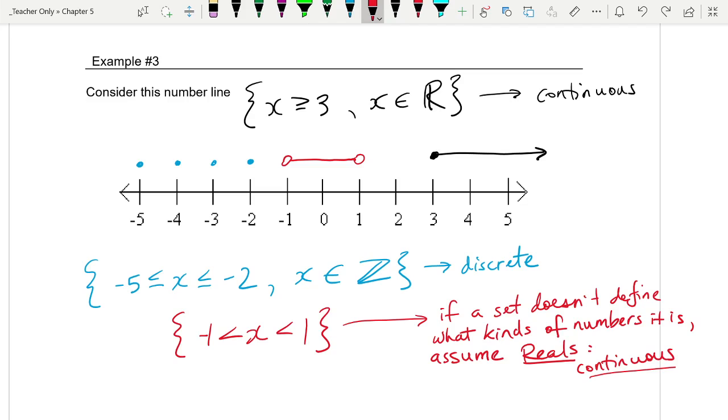Note, if a set doesn't define what kinds of numbers it is, assume reals, which of course makes it continuous. So I am going to have some sort of line. But how do I say that that line can't include negative 1? Because there's no little equals under here. So from here to here it would look like that. So this one's definitely continuous. There's what the difference looks like on a number line. Now let's look at graphs in two dimensions.